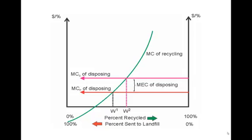So there's good reason to suspect that there's an external cost associated with throwing stuff to the landfill. In this figure, we've represented this as a fixed marginal external cost of disposing. The socially optimal level of disposal would be where the marginal cost to society of disposing equals the marginal cost of recycling, and that would be at W2. But unless those external costs are internalized in some way, we would end up back at W1, where the marginal cost of recycling to the individual equals the marginal cost of throwing it to the landfill.